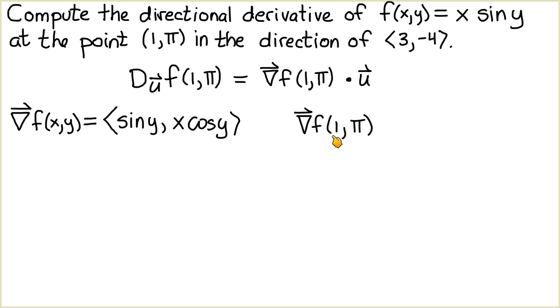So we replace x with 1 and y with π in this vector to obtain the vector ⟨sin(π), 1·cos(π)⟩, which equals ⟨0,-1⟩.